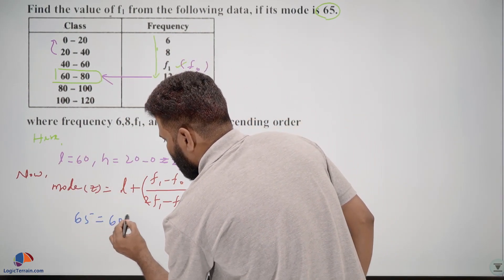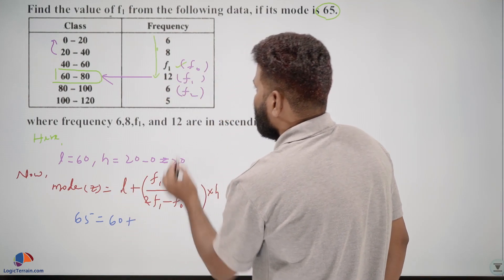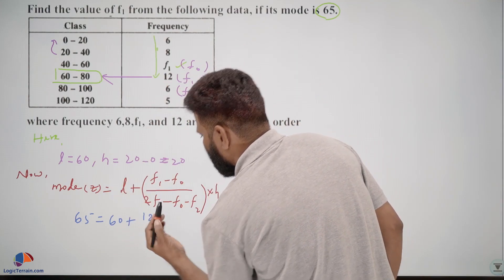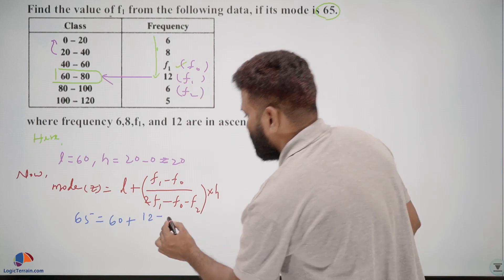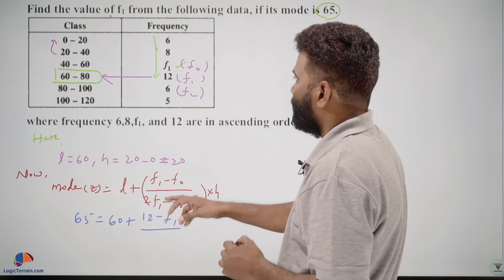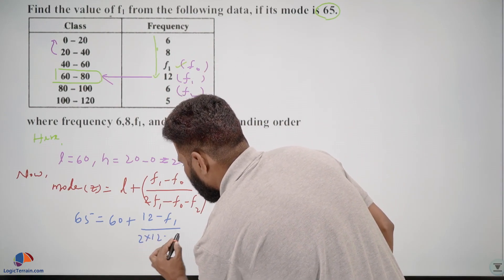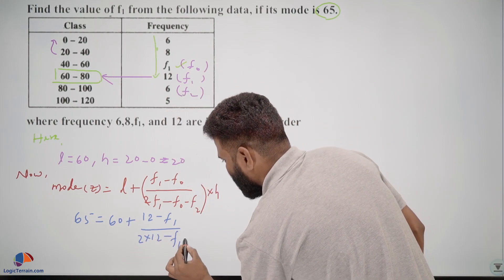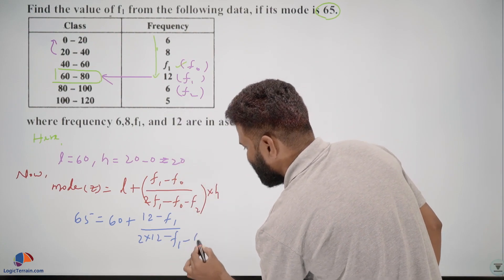L is 60 plus f1 is 12 minus f0 is f1, and 2f1 is 2 into 12 minus f0 minus f2 is 6 into h is 20.